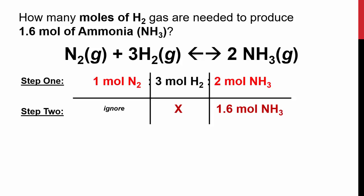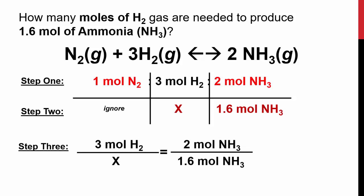We now set up that proportion that you can already see. We have 3 moles of hydrogen over x equals 2 moles of ammonia over 1.6 moles of ammonia. Now cross multiply, and we end up with 2.4 moles of hydrogen. Does this make sense? It should.